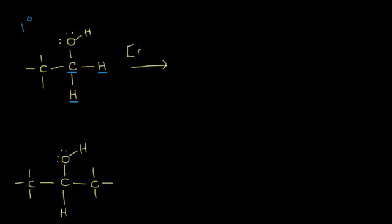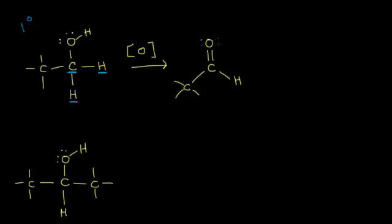If I were to oxidize this primary alcohol, one way to think about the oxidation of an alcohol is to think about the number of bonds of carbon to oxygen. On the left side, we have one bond of our alpha carbon to oxygen. In the mechanism, we're going to lose a bond of carbon to hydrogen and gain another bond of carbon to oxygen, giving us two bonds. One hydrogen remains along with the alkyl group, so this gives us an aldehyde functional group. If you oxidize a primary alcohol one time, you will get an aldehyde.